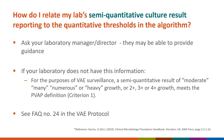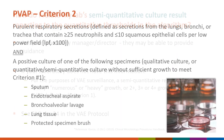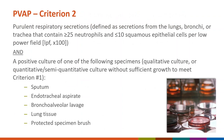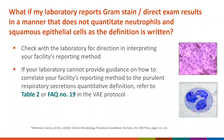This information can be found in FAQ number 24 in the VAE protocol. PVAP criterion two requires the purulent respiratory secretions definition to be met and an organism identified from sputum, endotracheal aspirate, BAL, lung tissue, or protected specimen brush, without sufficient growth to meet the quantitative or semi-quantitative thresholds in criterion one. Purulent respiratory secretions is defined as at least 25 neutrophils and 10 or fewer epithelial cells per low-power field. If laboratory results are reported in a format that does not meet the definition as written, first check with the lab to determine equivalent reporting criteria, or refer to table two and FAQ number 19 in the VAE protocol.